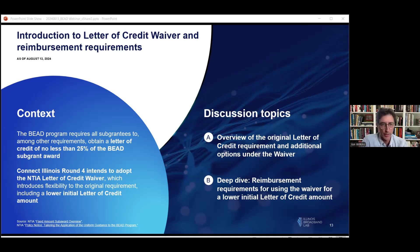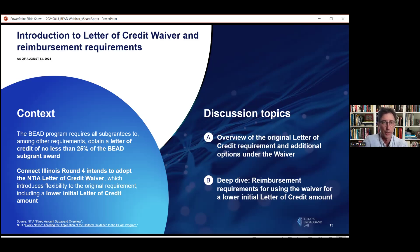What NTIA has done — in the second half of last year — is release a fairly detailed document called the letter of credit limited waiver, which creates a number of modifications intended to somewhat improve the way the letter of credit is implemented in the real world of BEAD subgrants. Somewhat similar to the prior topic, the state of Illinois said in its Volume 2 that it intends to take full advantage of the letter of credit limited waiver, and any other waivers that may come later that NTIA allows. Essentially, the state of Illinois is going to make available to its participants every degree of flexibility that NTIA is going to support.